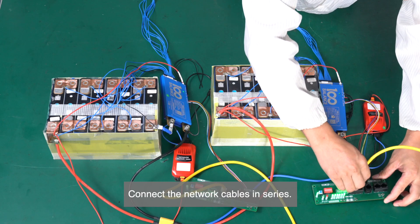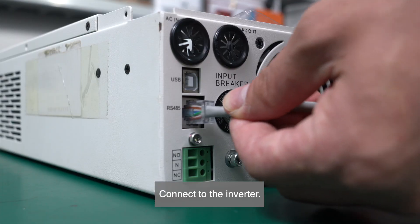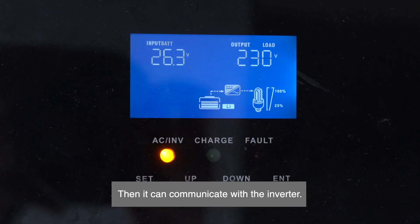Connect the network cables in series. Connect to the inverter. Then it can communicate with the inverter.